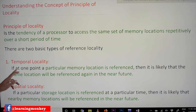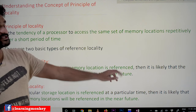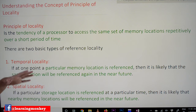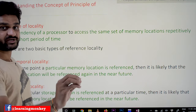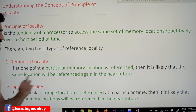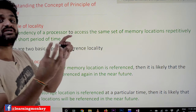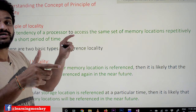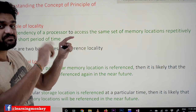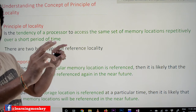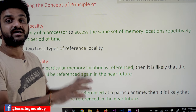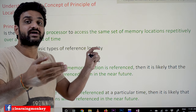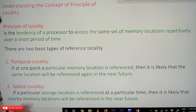Temporal locality states that if at some point of time a particular memory location is referenced, then it is likely that the same location will be referenced again in the near future. It is very much likely that within the near future the same memory location will be accessed again. Such kind of locality of reference is what we call temporal locality.